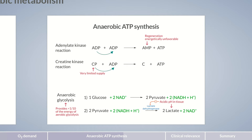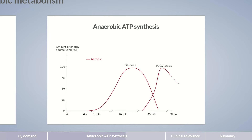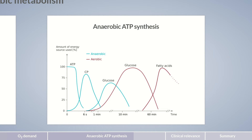Despite the disadvantages described, the body needs to provide anaerobic energy. Aerobic metabolism in muscles can't start directly, even if the oxygen supply is adequate. This initial period needs to be bridged by anaerobic processes. In other words, the immediate energy supply in muscle cells is always anaerobic. And of course, anaerobic processes are always required for gaining energy in the absence of oxygen.